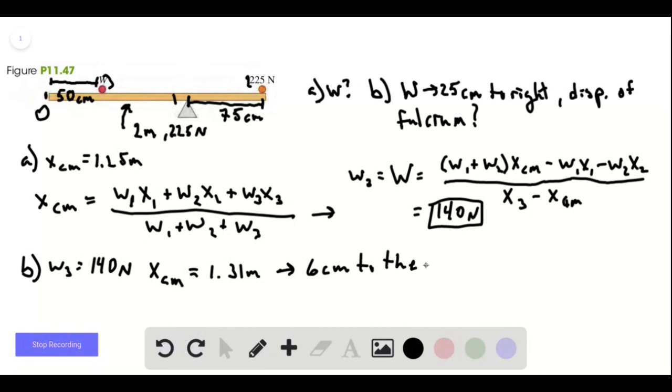To the right, which makes sense because we're moving the weight w to the right, so the center of mass has to move to the right as well.